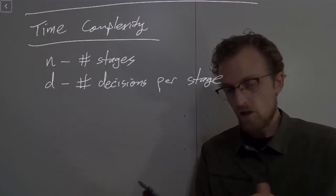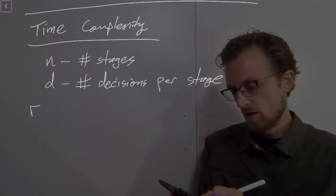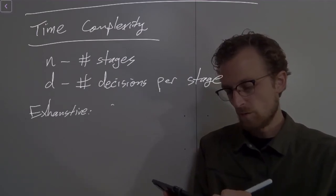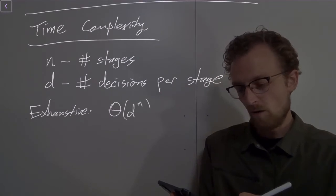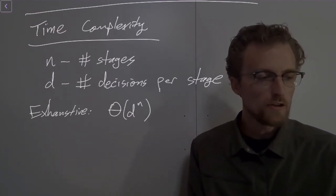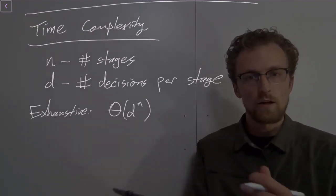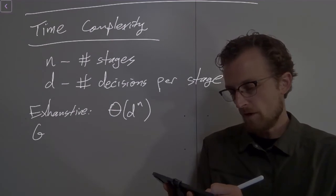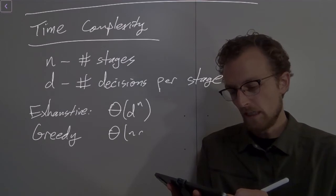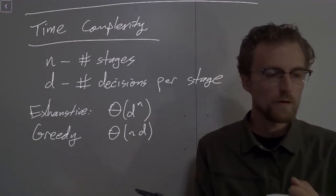I'll set the stage by reminding you what the exhaustive search and the greedy algorithm complexities were. Exhaustive was big theta of d to the power of n. If we have d decisions to make per stage and n stages, then we have d to the power of n total decisions to make. Greedy was much faster: big theta of n times d, because at each stage, all we had to make was d decisions.